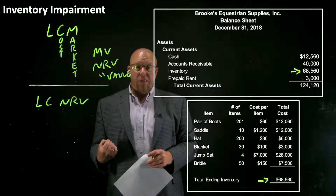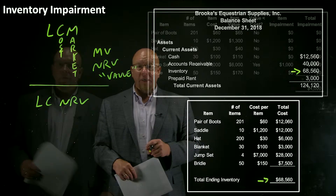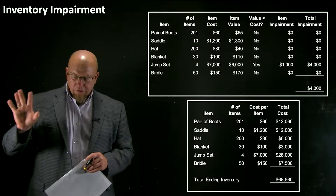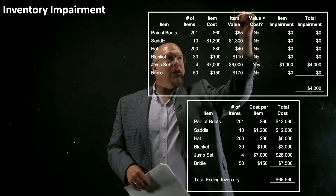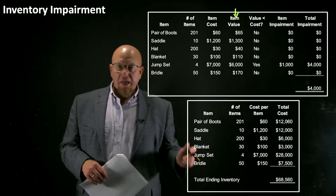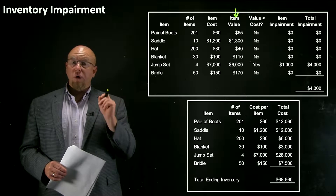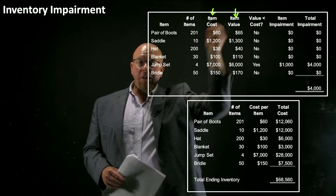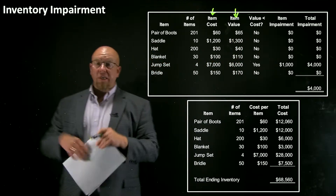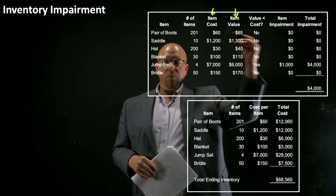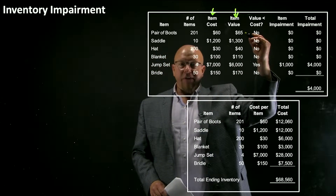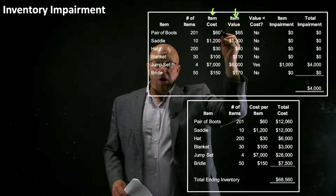You'll see in a minute that this inventory is going to decrease from $68,000 down to about $64,000 because one of these items has an impairment indicated. Setting aside the nuance of market value versus net realizable value, let's just say we've determined 'item value.' Here's our inventory listing with the same quantities as before. Item cost is our historical cost — what we paid. On an item-by-item basis, we check for impairment. The boots cost $60 per pair; current value is $65 — cost is lower.